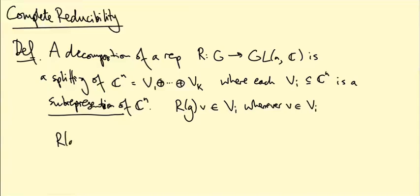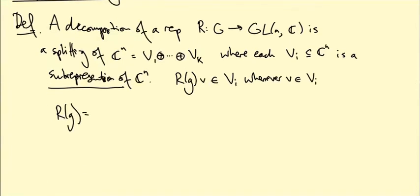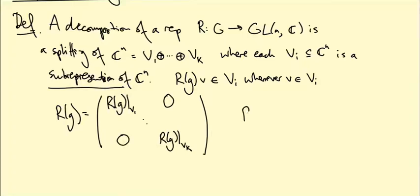In this case we can write R(g) as a block diagonal matrix: R(g) restricted to V_1 all the way down to R(g) restricted to V_k, and all the off-diagonal blocks are zero. Another way of writing this is to say that R is the direct sum of R restricted to V_1 direct sum up to R restricted to V_n.